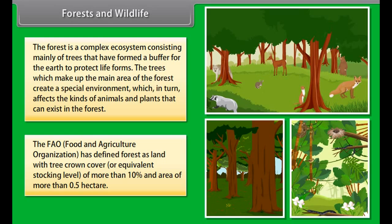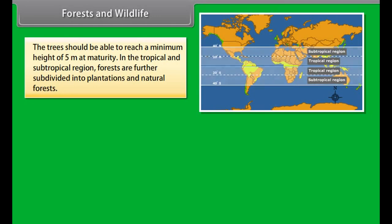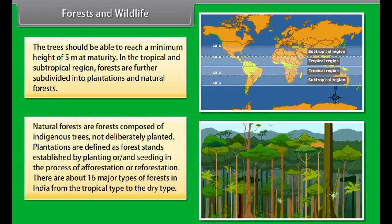The forest is a complex ecosystem consisting mainly of trees that have formed a buffer for the earth to protect life forms. The trees which make up the main area of the forest create a special environment which in turn affects the kinds of animals and plants that can exist in the forest. The FAO, Food and Agriculture Organization, has defined forest as land with tree crown cover or equivalent stocking level of more than 10% and area of more than 0.5 hectare.